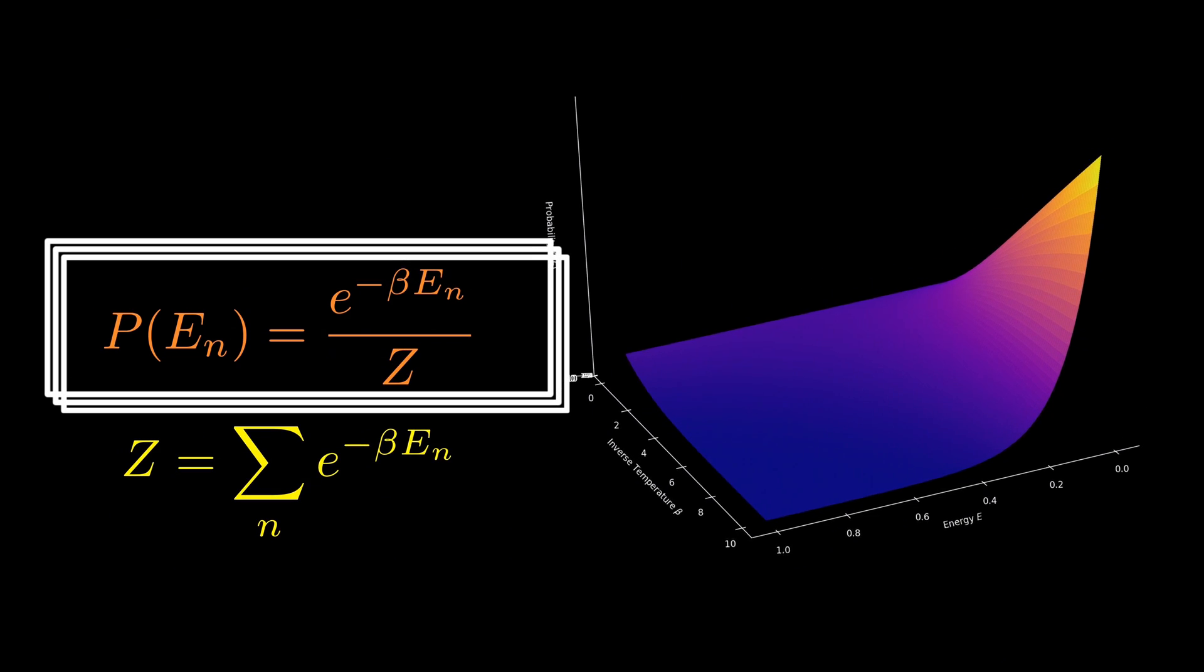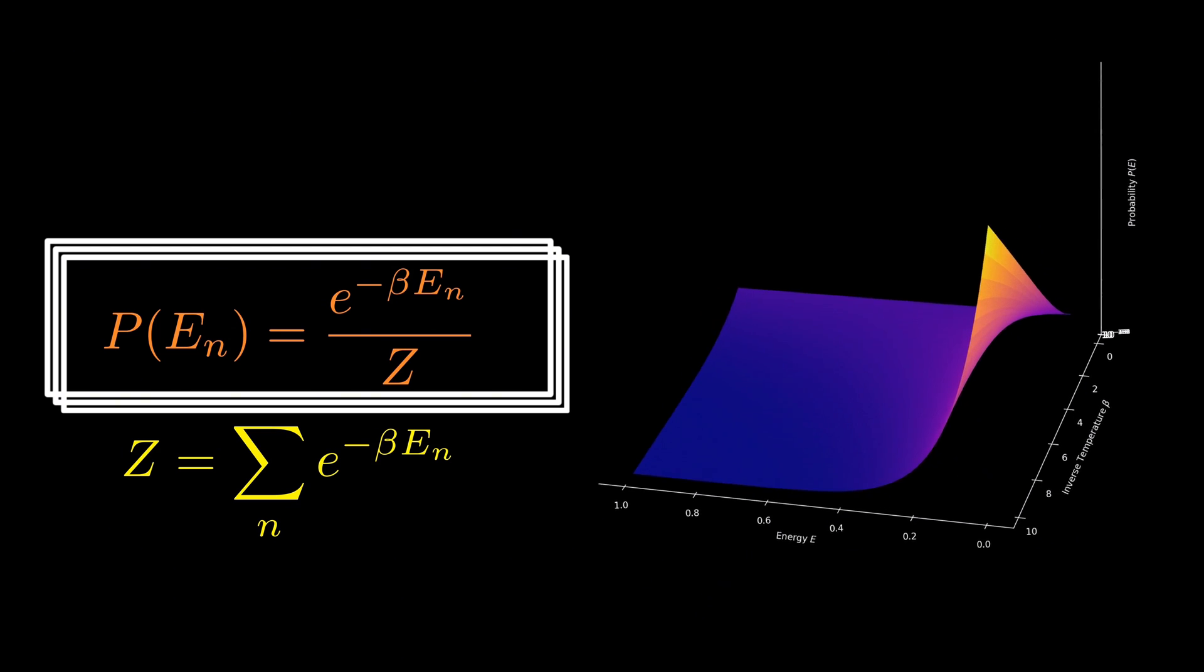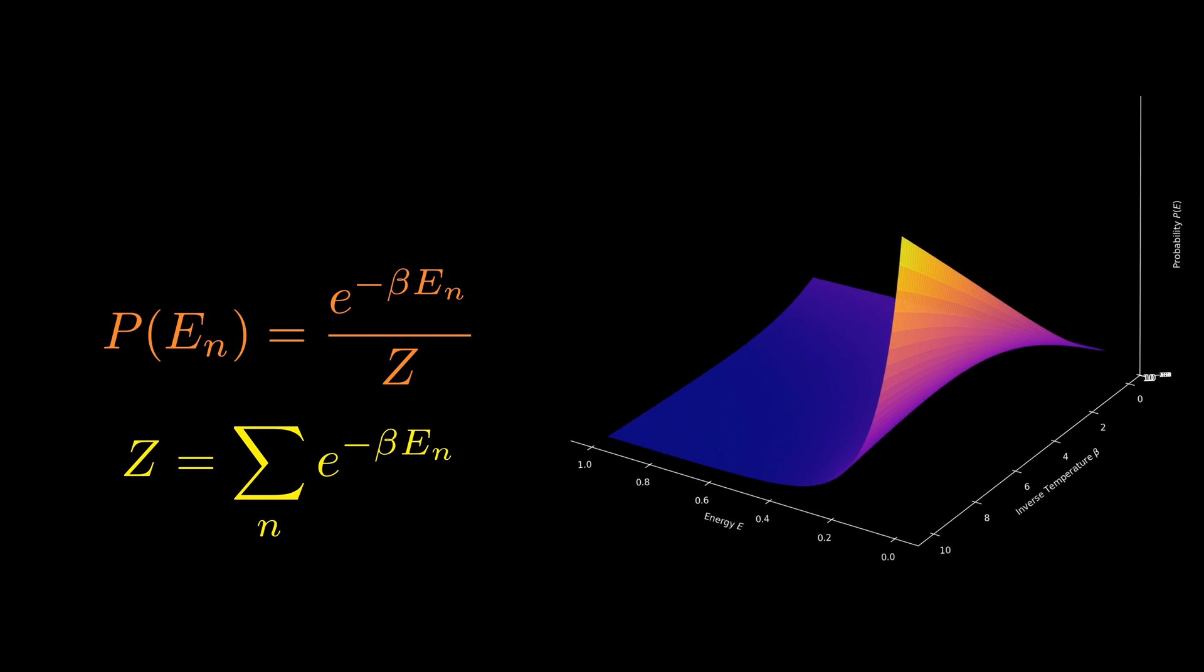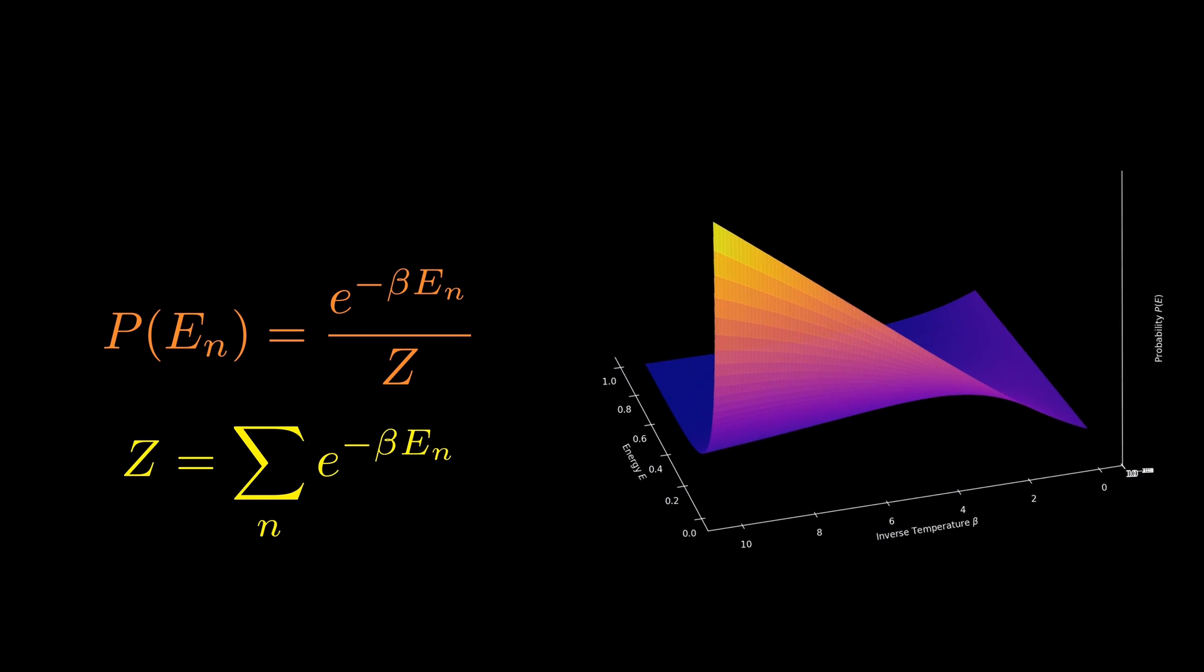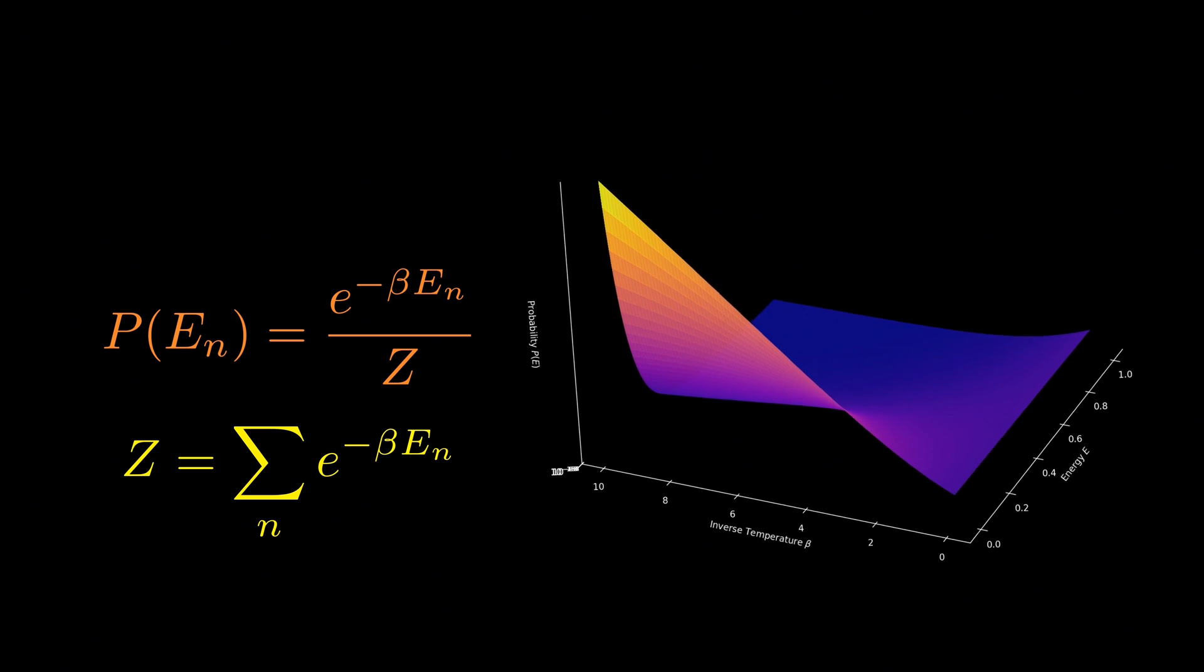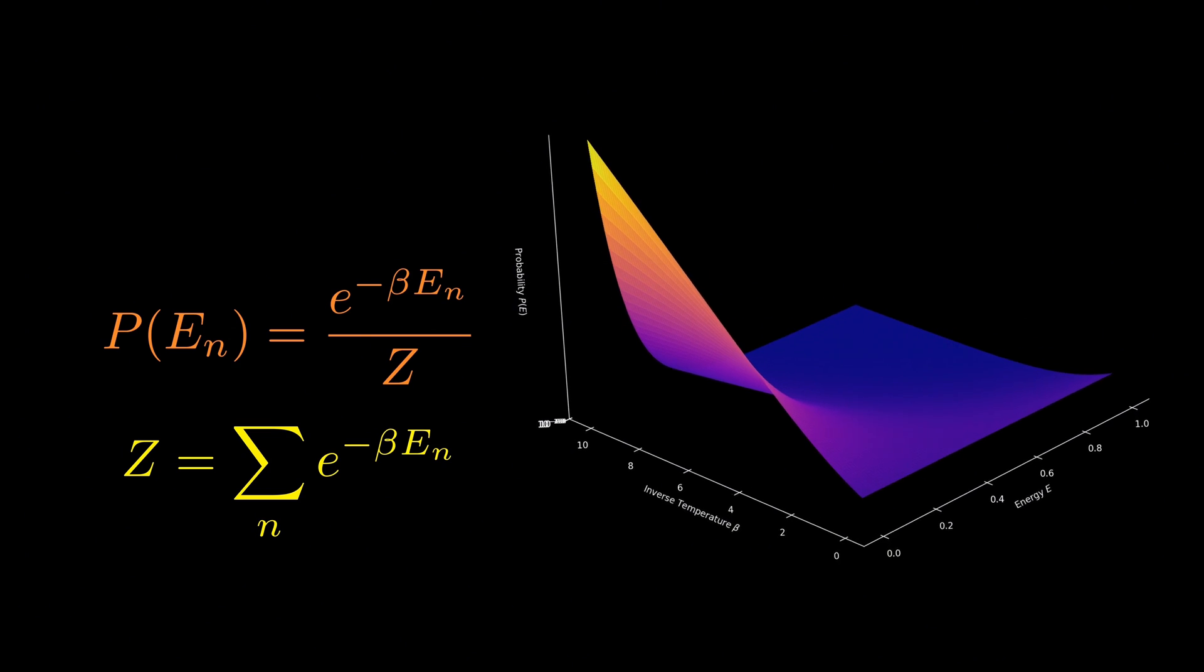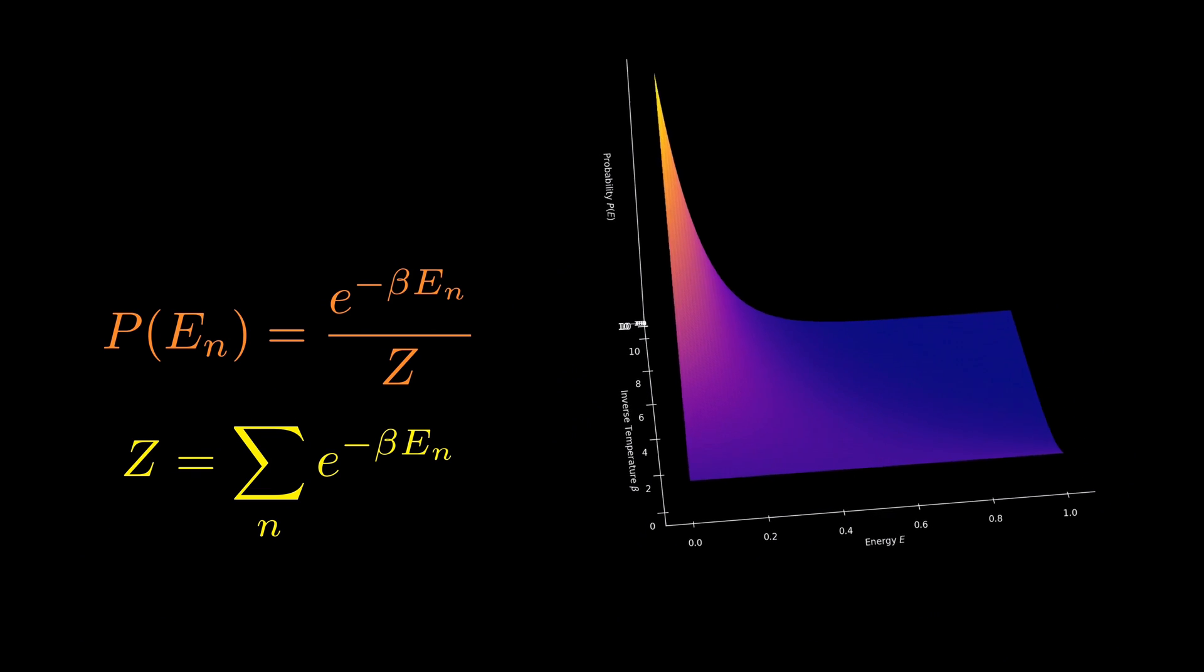This formula defines the famous Boltzmann distribution, the cornerstone of statistical physics. It tells us that lower energy states are more probable, but the higher the temperature, the more evenly distributed those probabilities become. So far, everything we've discussed belongs entirely to physics. But now, let's make the leap to machine learning.